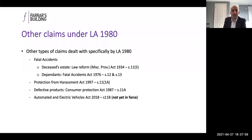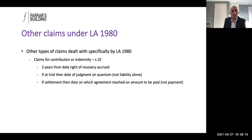Other limitation periods under the Limitation Act include fatal accidents — I'll deal with that at the end. Also for defendant practitioners, where there's a claim for contribution or indemnity, it's a two-year limitation period. If dealt with at trial, that's judgment on quantum, not just liability. If by way of settlement, it's the date on which agreement was reached on the amount to be paid — the date of agreement, not the date of payment.